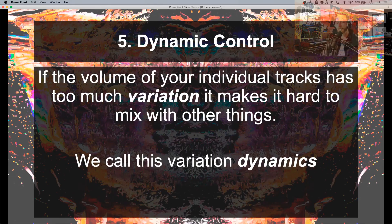Number five: Dynamic control. If the volume of your individual tracks has too much variation, it just makes it hard to mix with other things — and we call this level of variation dynamics. If you take the loudest part and the quietest part and look at that gap, that's described as the dynamic range. Sometimes we have tracks that are just too dynamic, and what can happen is it just feels really difficult to place them in the mix. We might turn them up and go, hey, it feels really good — oh, now it's too quiet. Let's turn it up — whoa, now it's too loud. If you're feeling like you're grabbing the fader and constantly moving it up and down and you can never get it right, that's a pretty good indicator that that particular track has too much dynamics and we probably need to get it under control.